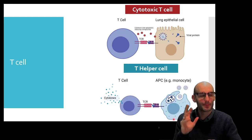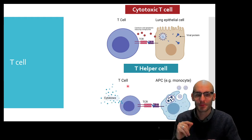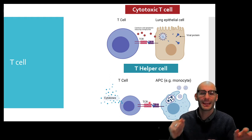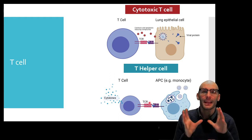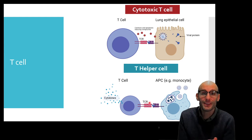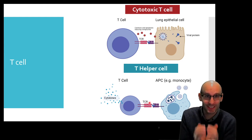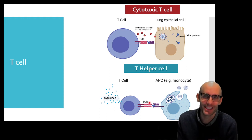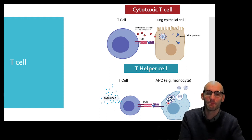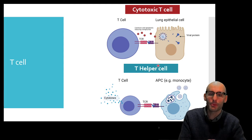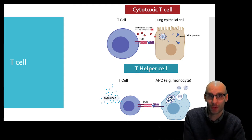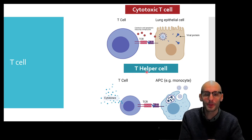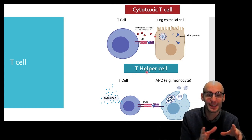The T helper cell is a bit different, but there are a lot of similarities. They have a T cell receptor. This T cell receptor is unique to each T cell, which is amazing, and it has the ability to recognize one antigen — say, a fragment of a spike protein, for example. Now, whereas cytotoxic T cells go around checking all your cells for viral infections, T helper cells mostly work with antigen presenting cells.